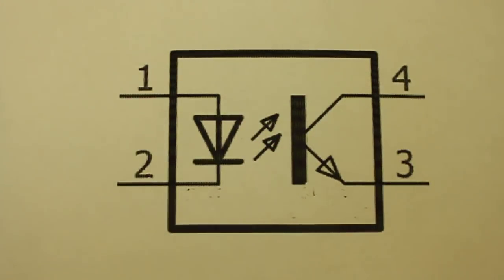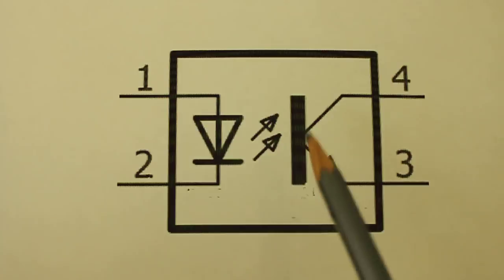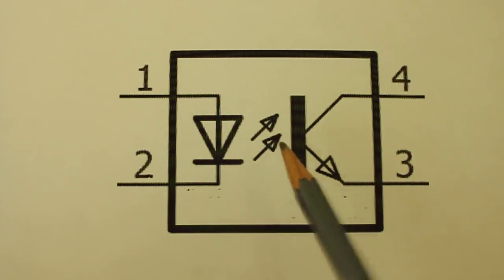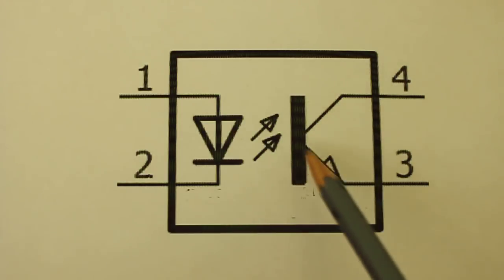The photo transistor is a special type of transistor where you do not need to apply a current directly to the base. The base is open and is sensitive to light. When the light impinges on the base, a small current is developed and the transistor closes and the current can flow.